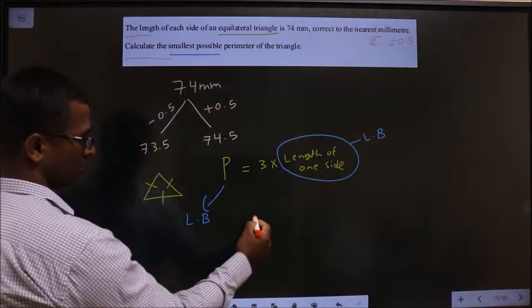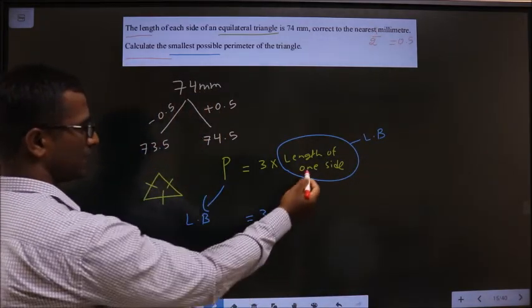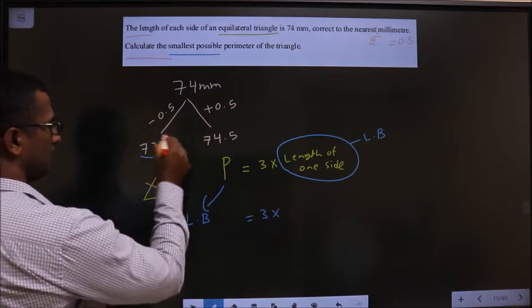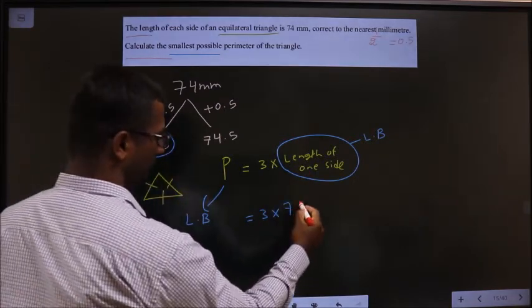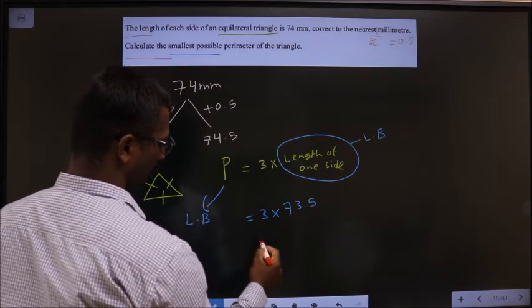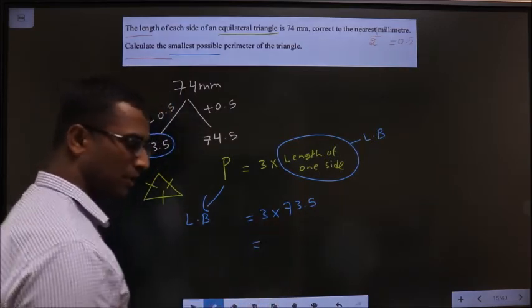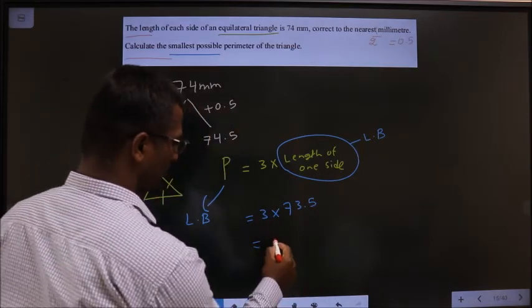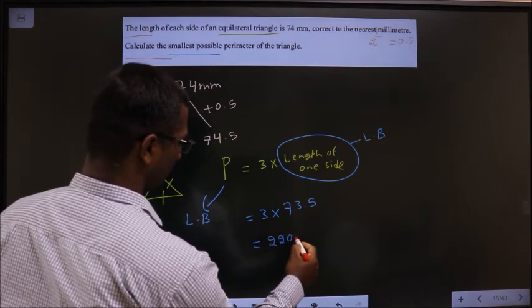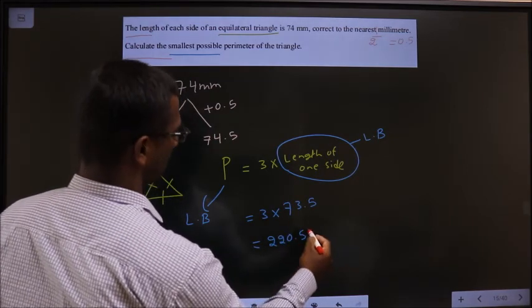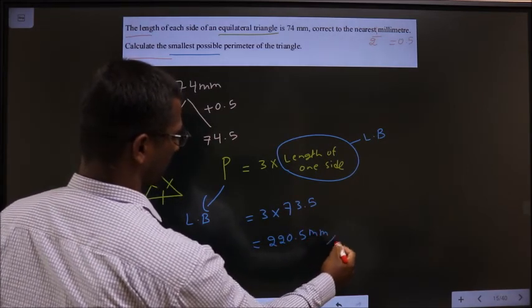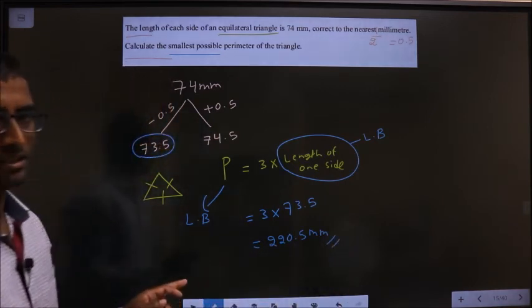So let us replace it. So 3 into length of the lower bound is 73.5. So 3 into 73.5 we get 220.5. Units are in millimeters. So this is the answer.